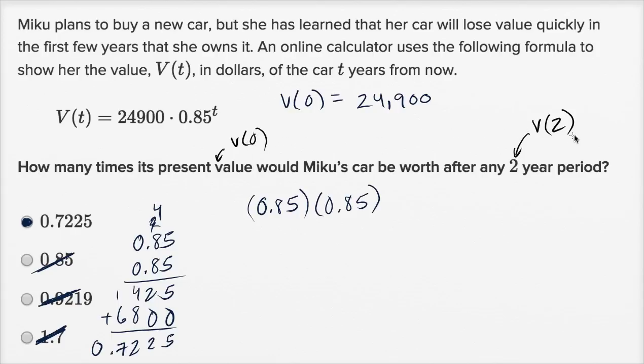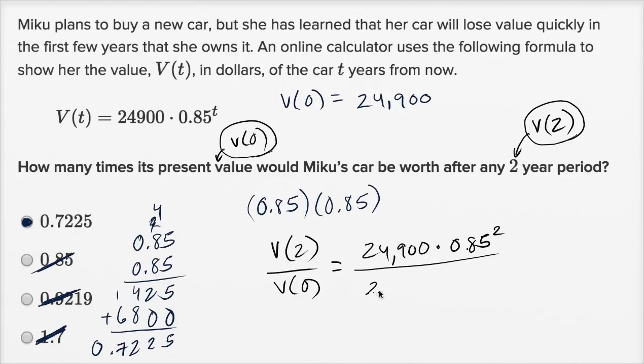So we wanna figure out how many times more is V of two than V of zero? How many times its present value would be its value in two years? Well, so we take its value in two years, divide it by its present value. What's that going to be? Value in two years is 24,900 times 0.85 to the second power, over 24,900 times 0.85 to the zeroth power. Well, these are going to cancel. This is just one, and you're just left with what we have before, 0.85 squared.